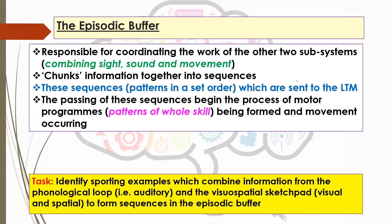What I want you to do is identify sporting examples which combine information from both subsystems — the phonological loop and the visuospatial sketchpad — to form these sequences. Can you think of sporting examples where there's both visual and auditory information that might be useful and that then comes together and is organised in the episodic buffer? Pause the video and try and come up with something.